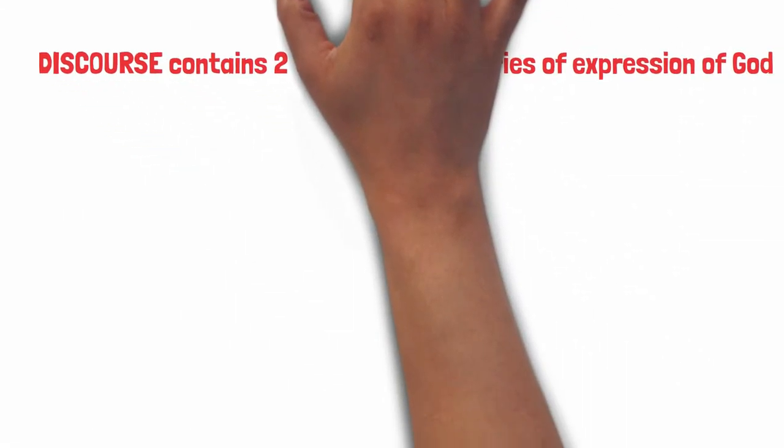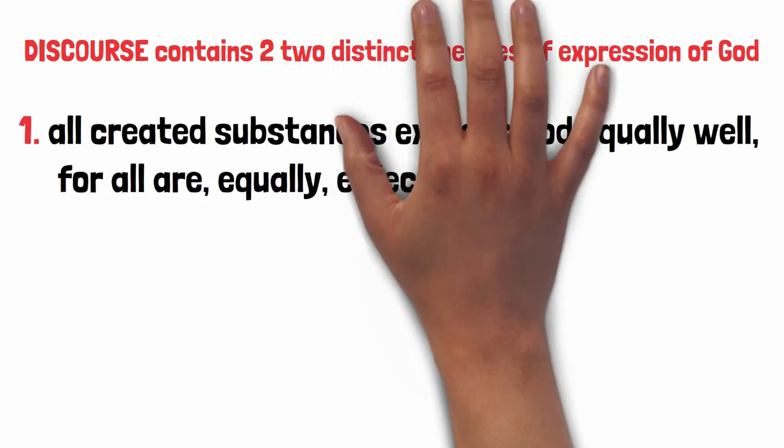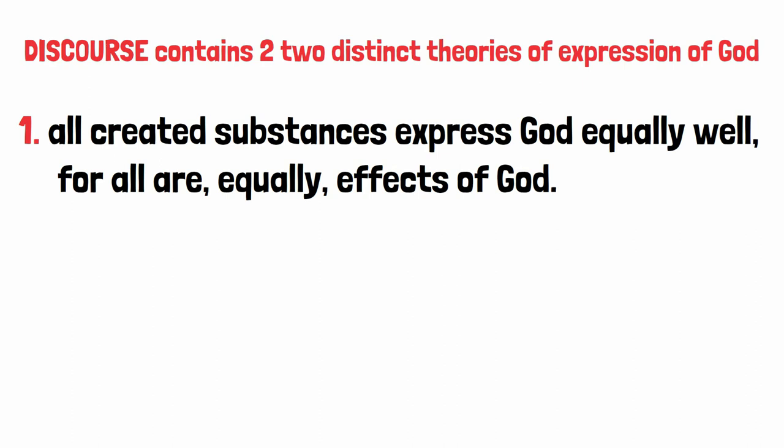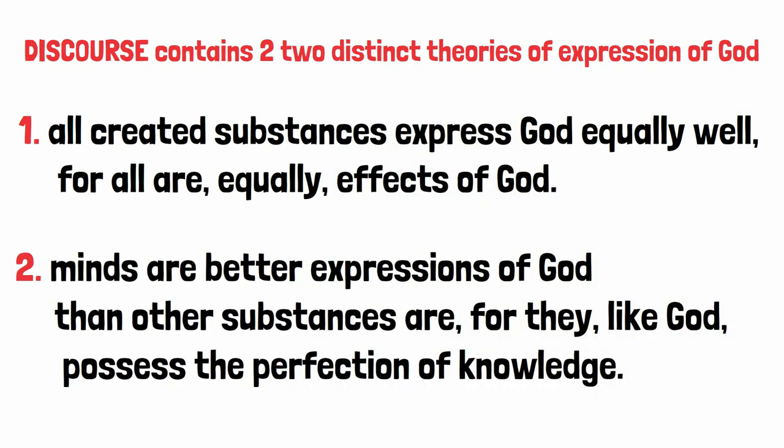Seeing that gives us some reason why Leibniz would say that in this sense of expression, minds express God and other substances do not. For minds resemble God in possessing a lower degree of the perfection of knowledge, something that is lacking in the lower substances. Trying to pull this all together, it appears that there are two distinct theories of expression of God in the discourse. The first is a causal theory of expression, holding that all substances express their causes. It appears, according to this theory, that all created substances express God equally well, for all are, equally, effects of God.